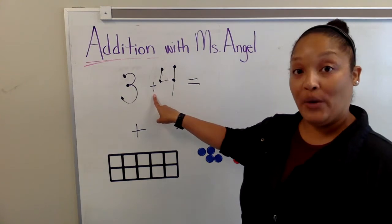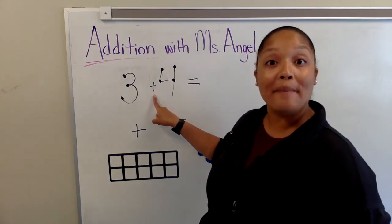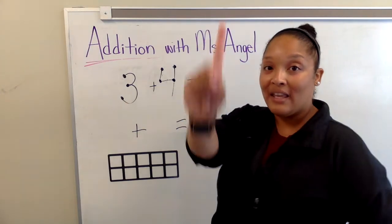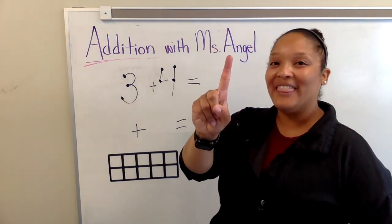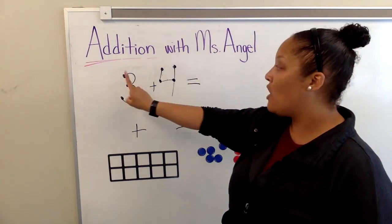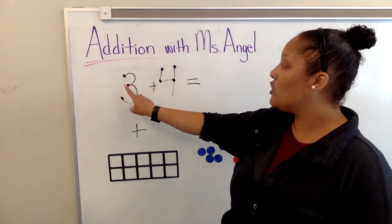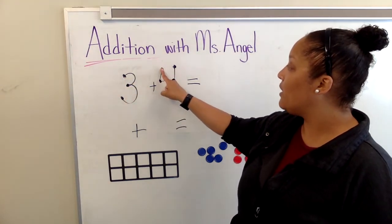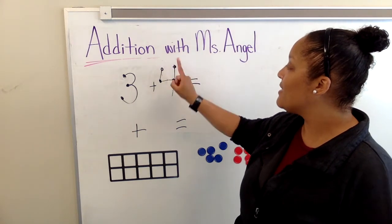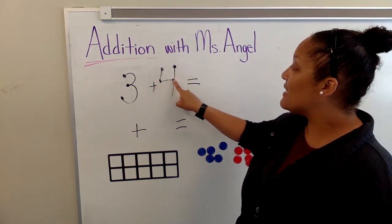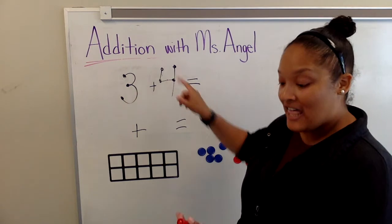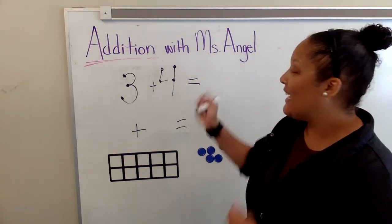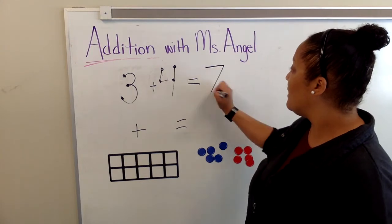For this equation we are using the touch math strategy to solve the problem. Get your counting finger and let's start: one, two, three, four, five, six, seven. Three plus four equals seven.